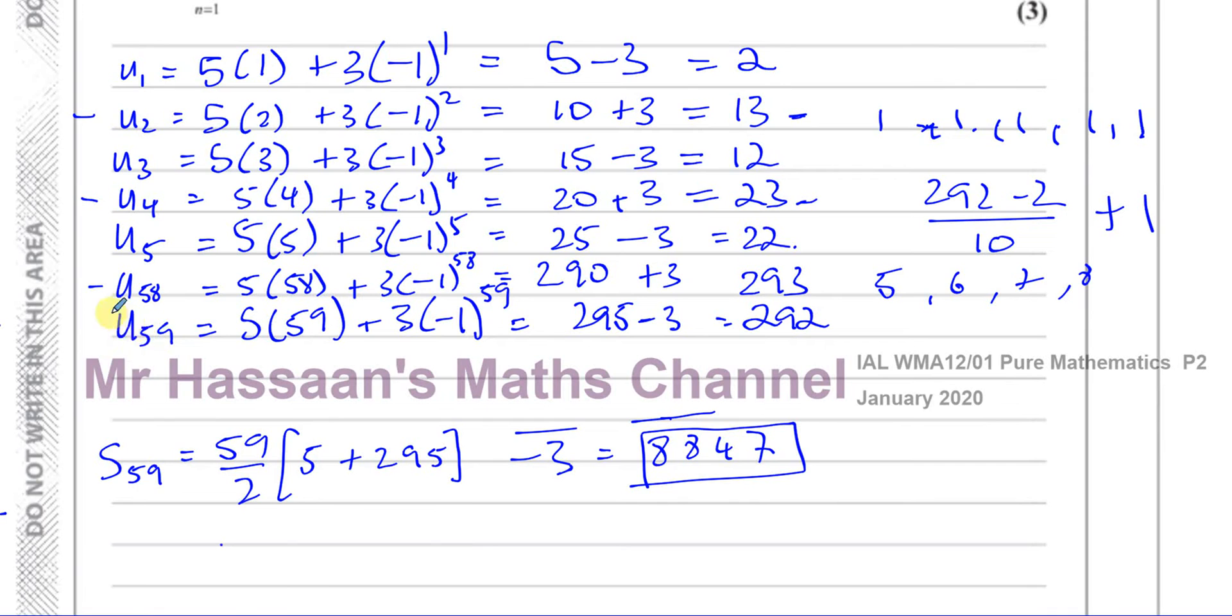We see that these pairs are going to cancel out and by every even pair would have cancelled out to give you zero. So you're left with the last term, which is an odd term, it's the 59th term, so you're going to be left with a minus three. So you have to take away three from the sum of all the numbers from five to 295 when they're going up in fives.